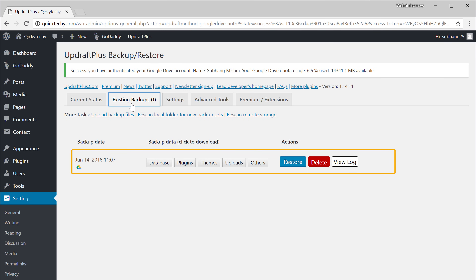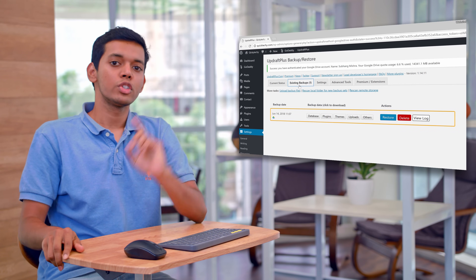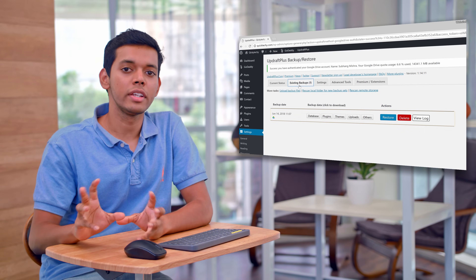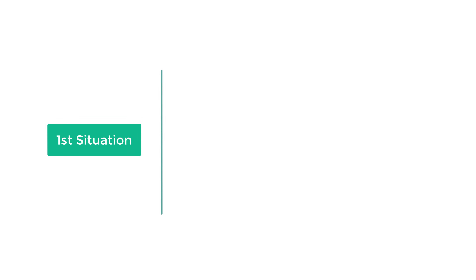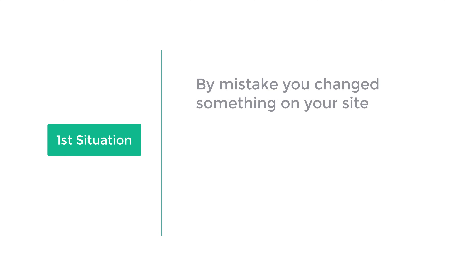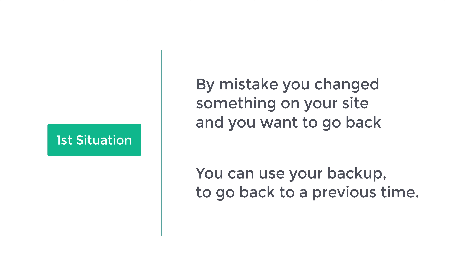So this is how you can take a backup of your website. Now how do you use this backup? There are two situations where you might need to use your backup. Let's take the first situation — let's say by mistake you changed something on your site and you want to go back. You can use your backup to go back to a previous time.